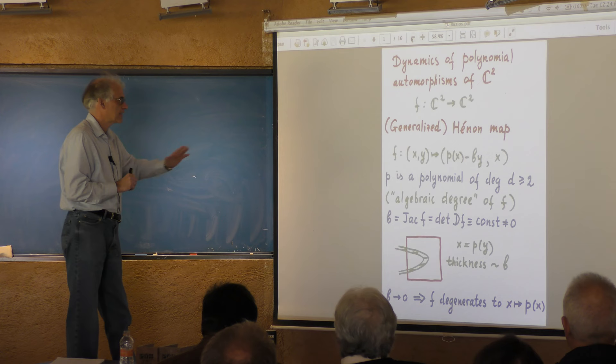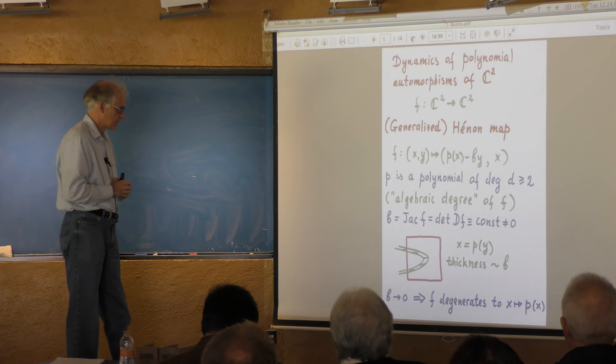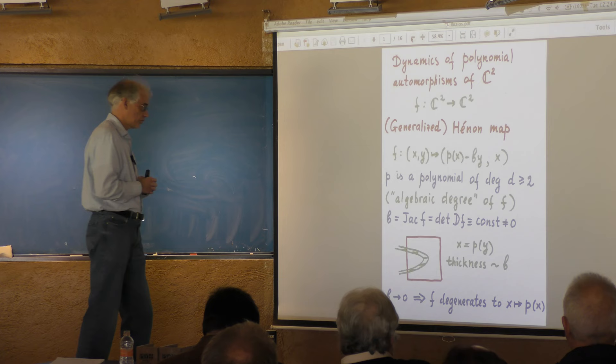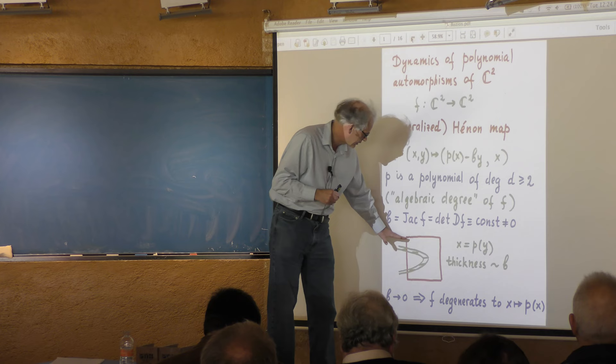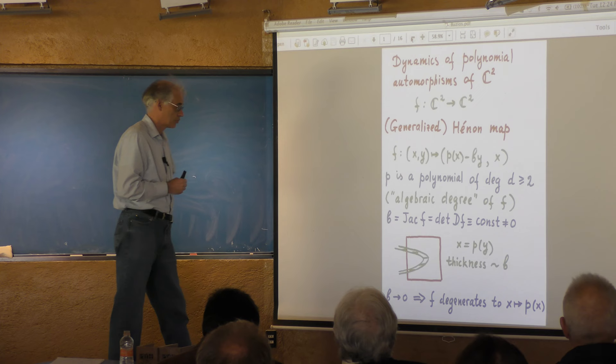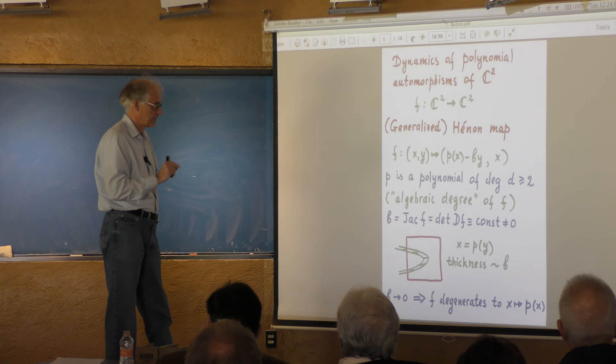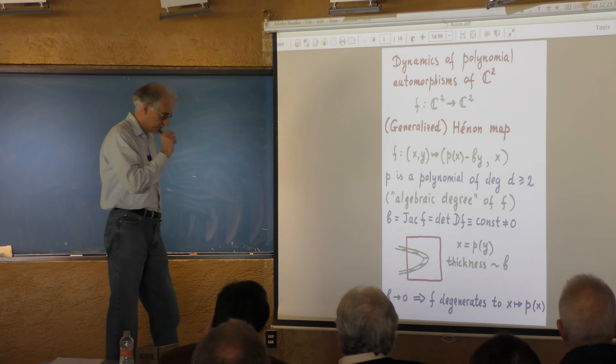For the purpose of this talk, the Jacobian will be assumed to be less than one in absolute value, which exactly means that the map is dissipative. The conservative case is a different theory that will be out of scope today. I will need to impose a stronger condition on B later, but we will discuss this as we go. If B equals zero, the map degenerates to a one-dimensional map — everything degenerates to dynamics on the parabola X = P(Y). For small B, you think of this map as a perturbation of one-dimensional dynamics, and dissipative Hénon maps should be considered as small perturbations of one-dimensional polynomials.